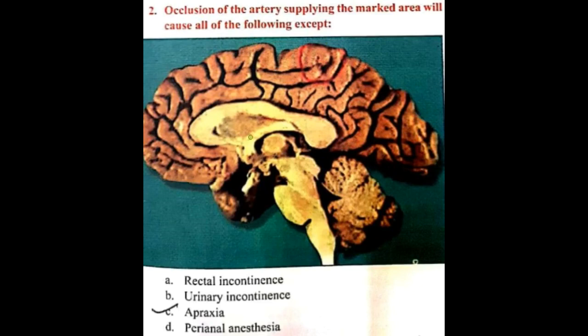First, what is this marked area? This is the central sulcus — it comes and ends here in the paracentral lobule. So the central sulcus will end in the paracentral lobule, and this lobule which you are seeing here is actually the paracentral lobule.